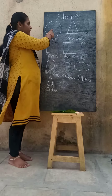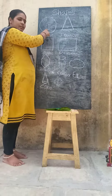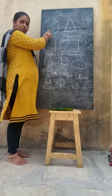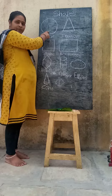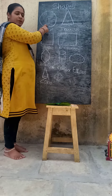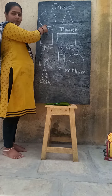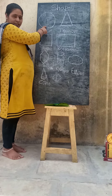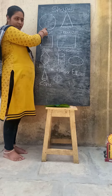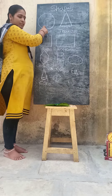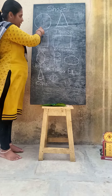Look here. It is a circle. Do you know a ball? Which shape is a ball? Circle. Ball's shape is circle.